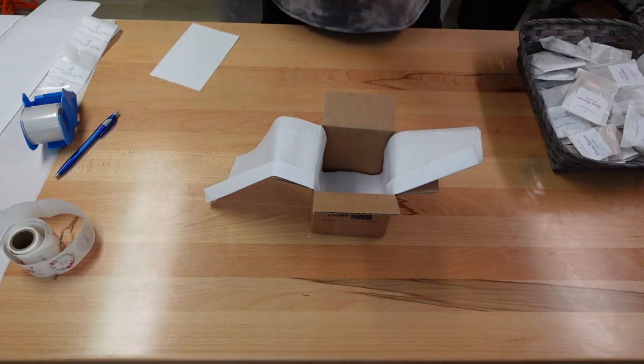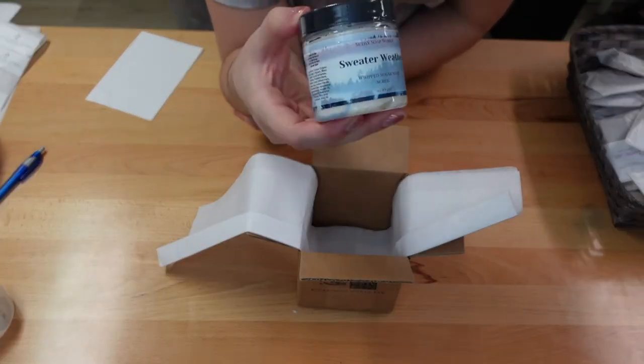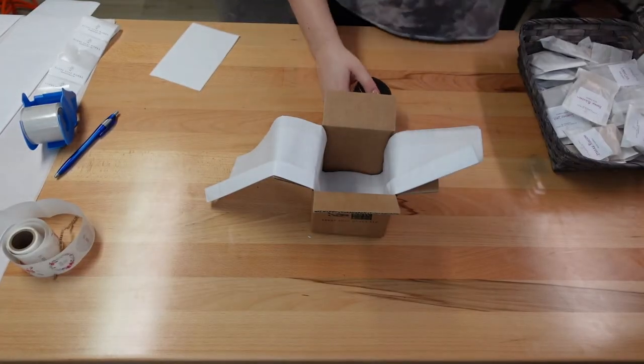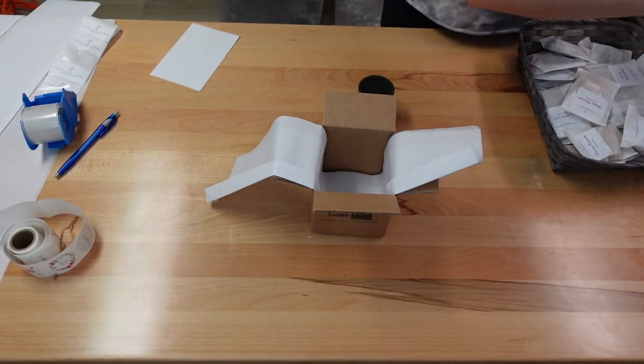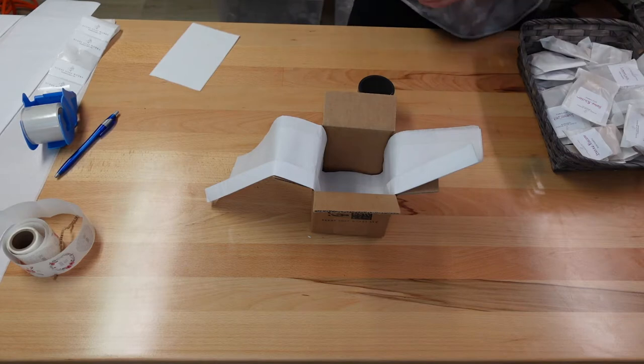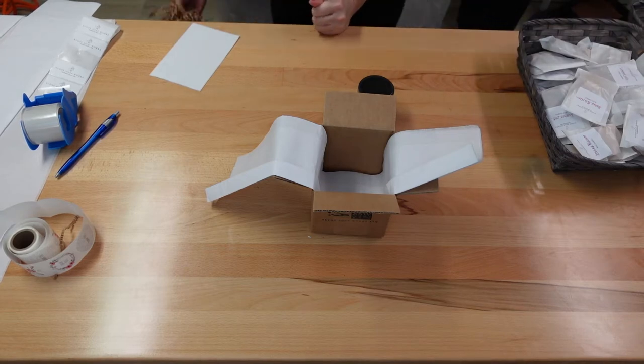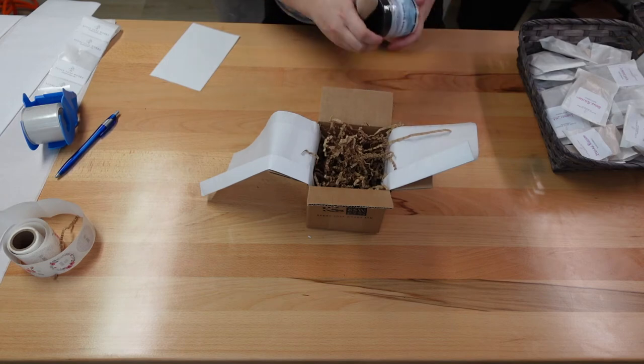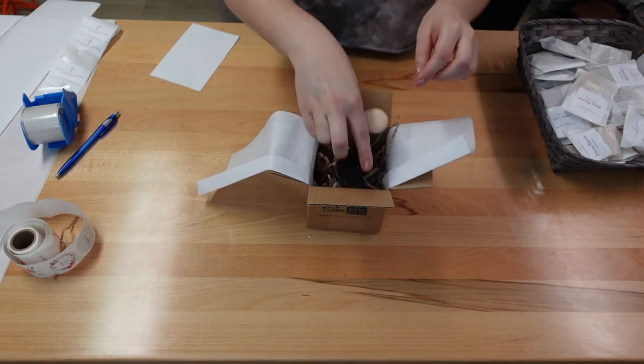She ordered a four-ounce Sweater Weather body scrub, the whipped sugar scrub. These are awesome for winter. They're so nice. They're so nice to use even for shaving but to remove that dead skin that you kind of get in the cold weather season. So we'll have that in there.